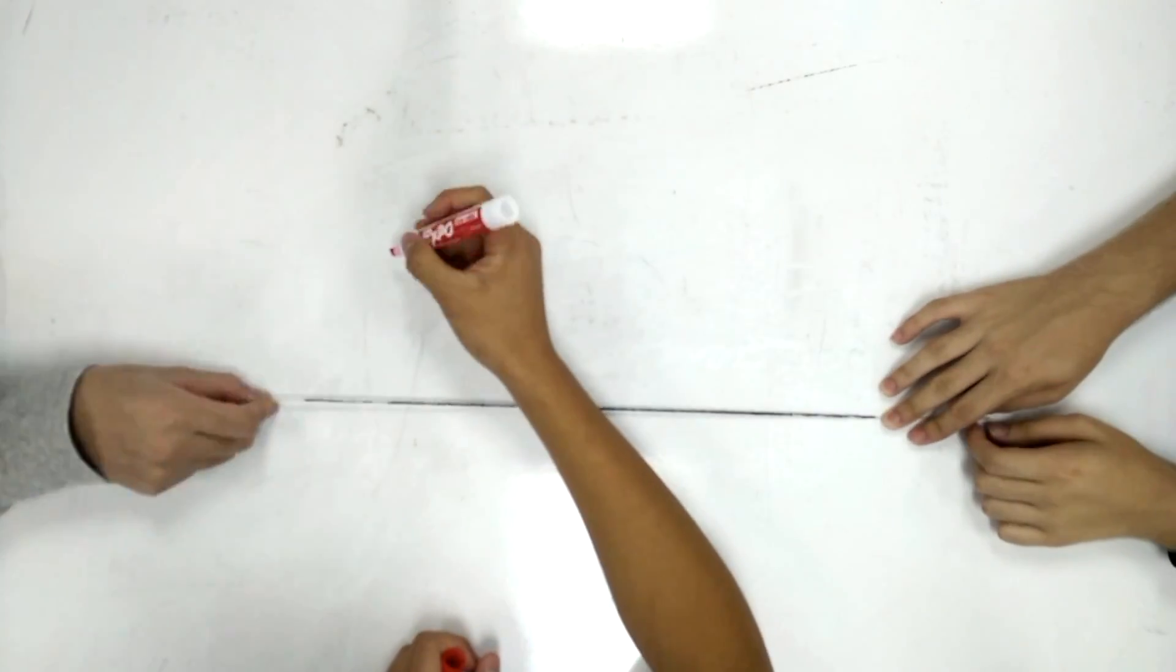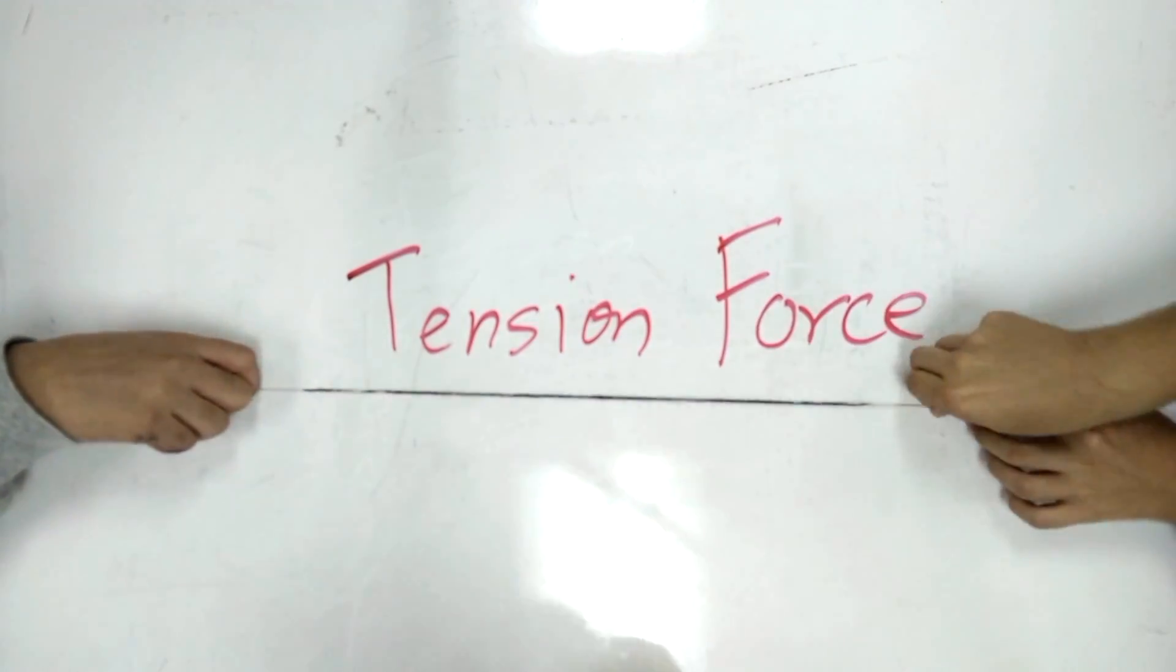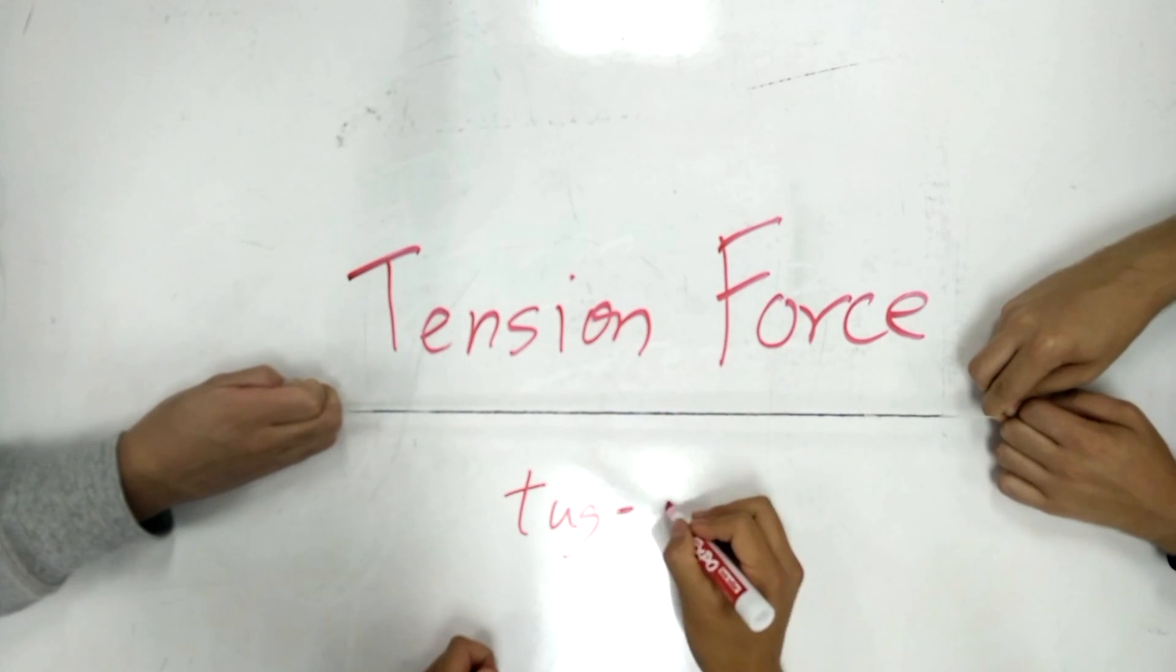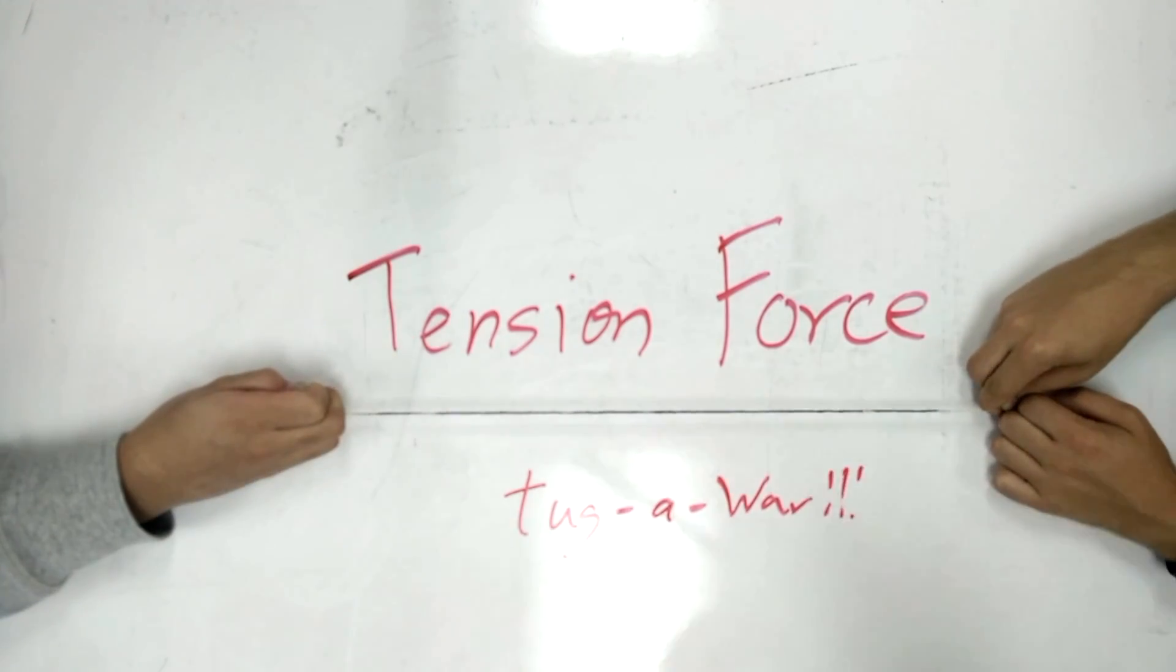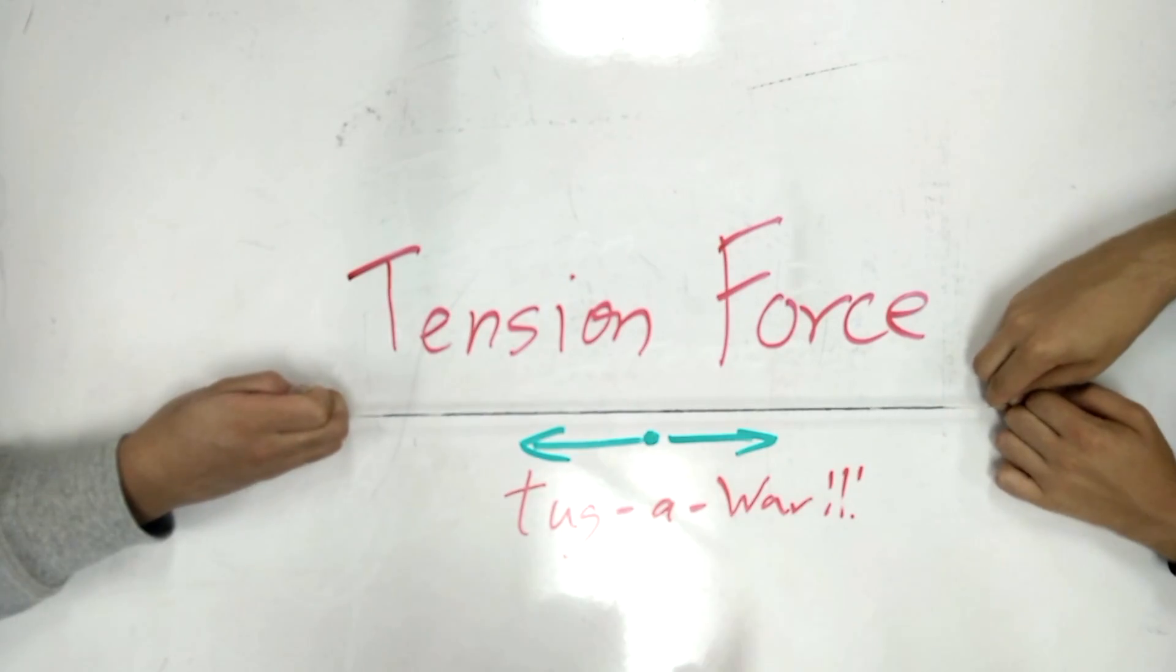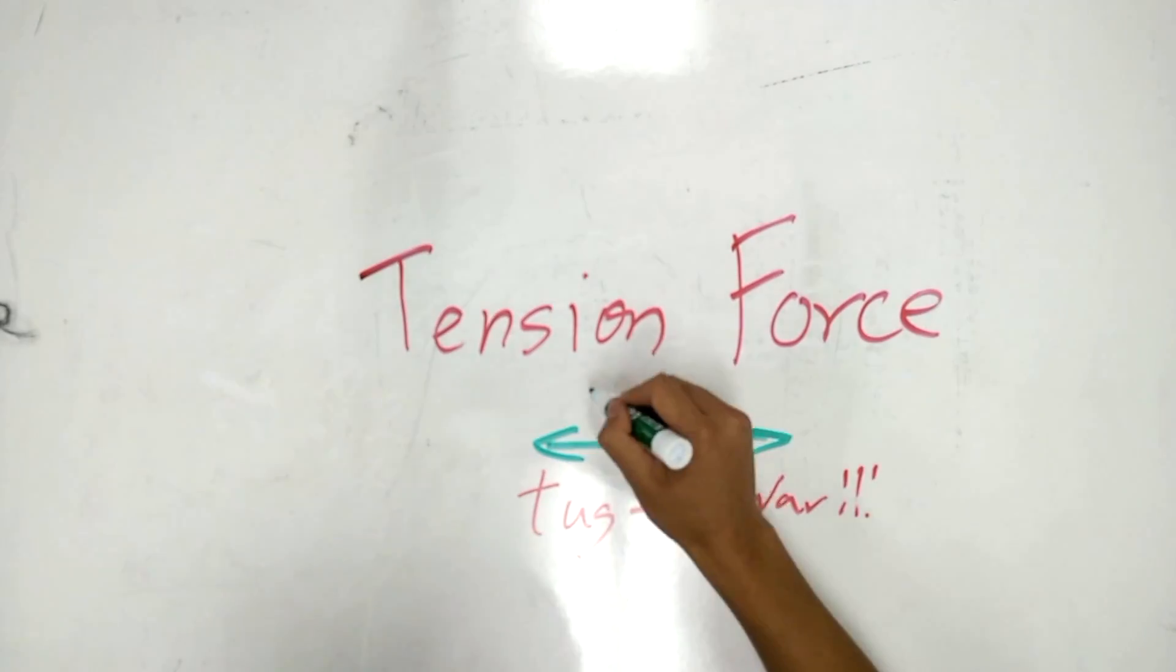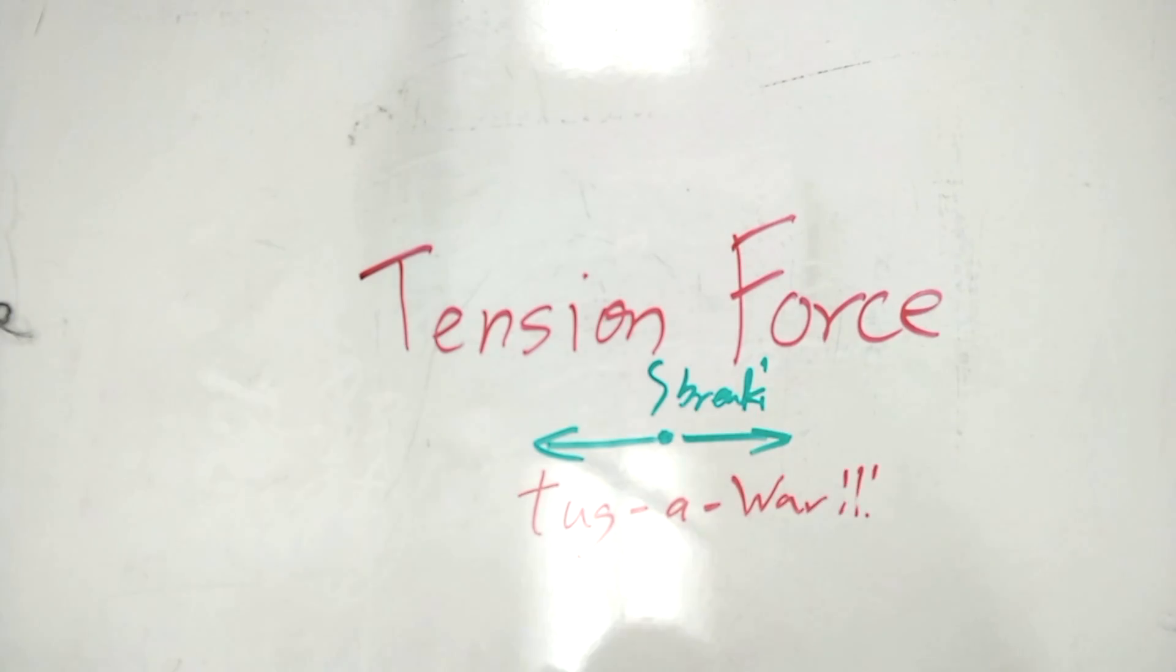The tension force exists in tight ropes and strings. Most commonly, this is demonstrated when you have tug-of-wars. Both hands provide force opposite of each other, but there's tension force in the rope that is parallel, yet opposite to the force of the hands. And when this tension force becomes too great, the rope breaks.